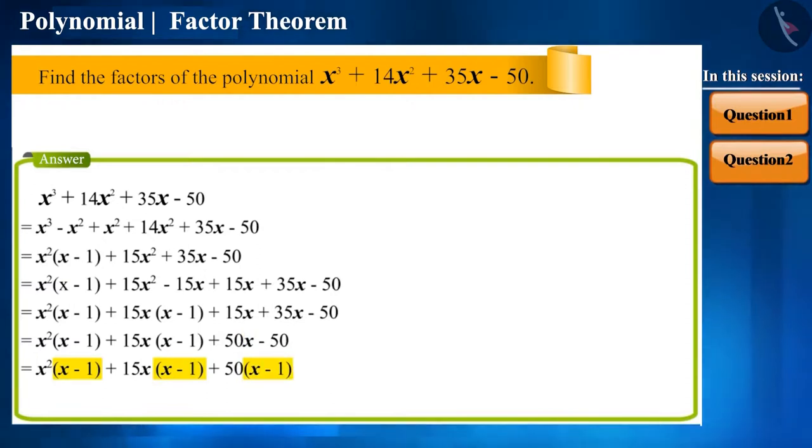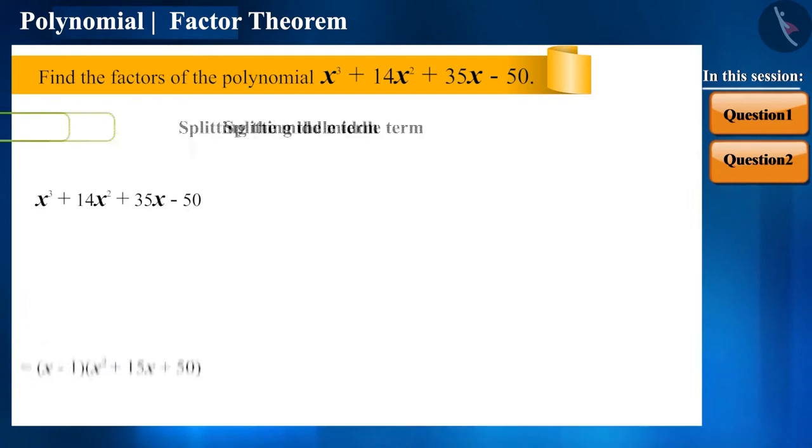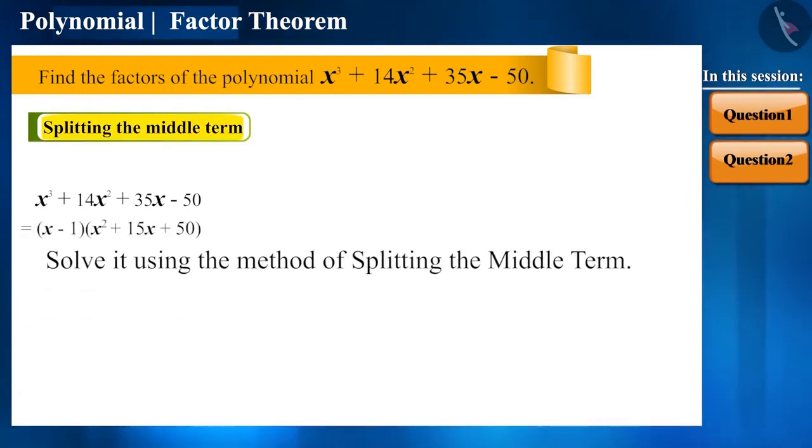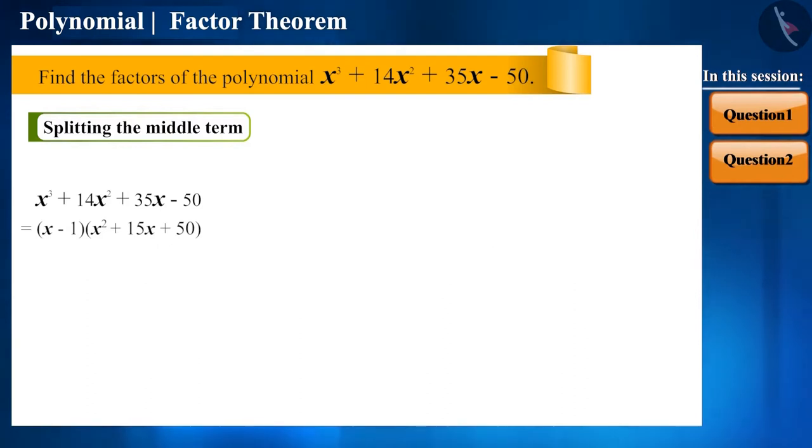from all the terms, we can express it like this x minus 1 times x square plus 15 x plus 50. This is in the form of a quadratic polynomial. Can we now solve it using the method of splitting the middle term? Yes.